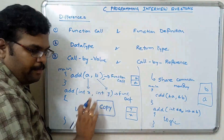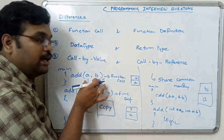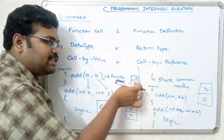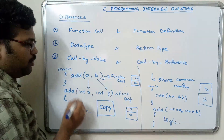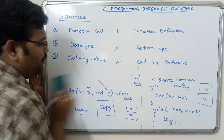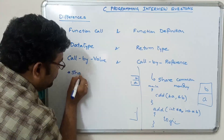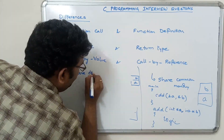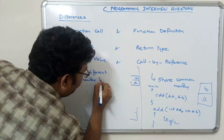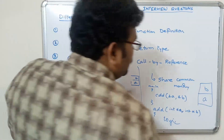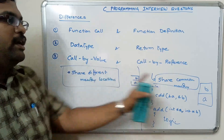In call by value, whatever manipulations we do on x and y will not be reflected on a and b, because a and b are separate — x and y are separate memory locations. In call by reference, a and b share common memory. This is the major difference between call by value and call by reference.